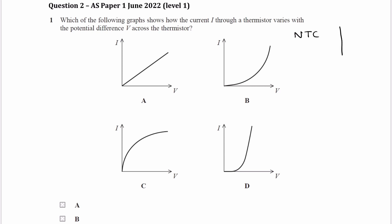So for those thermistors what happens is as the temperature increases the resistance will decrease. So as T goes up resistance goes down.